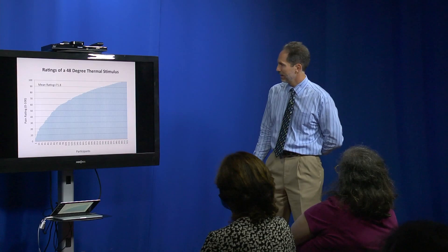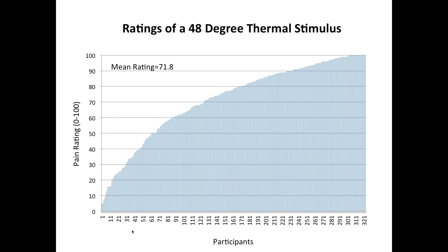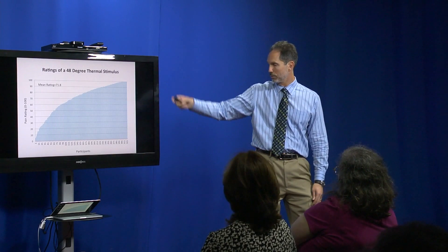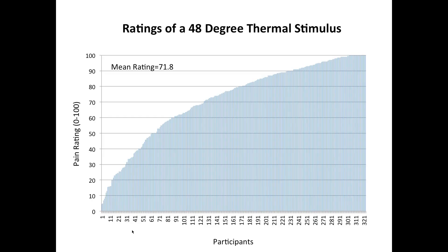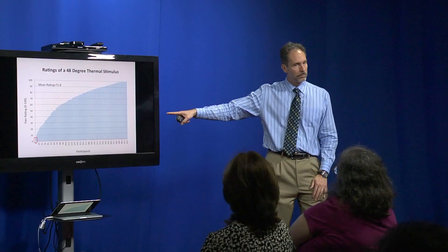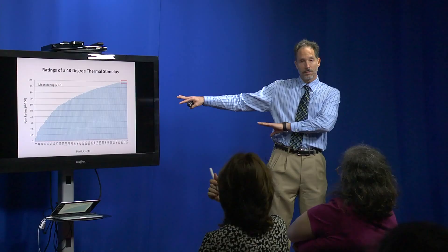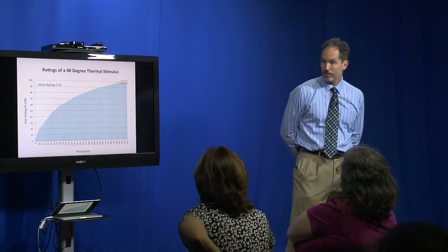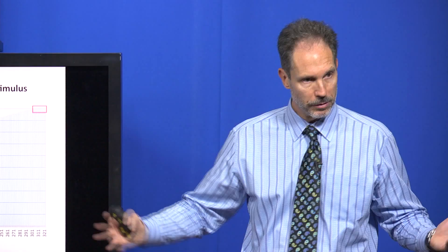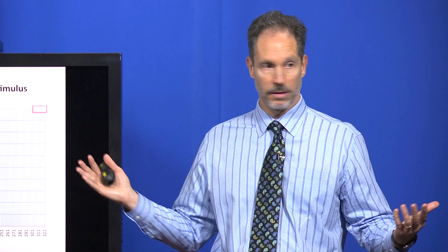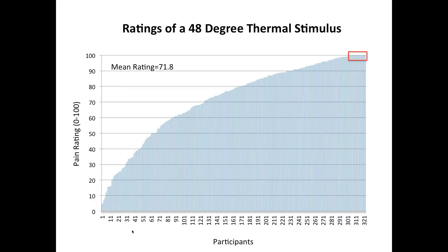For example, we applied a 48-degree Celsius heat stimulus to the arm—about 118 degrees Fahrenheit—and asked people to rate how painful it was on a scale from 0 to 100. On average, participants rated it almost a 72, so it's really fairly painful. But some people barely found it painful at all, rating it 5 out of 100, while others found it exquisitely painful. We see the same wild disparity in pain experiences as after surgery, and this has nothing to do with medications or health problems—the stimulus was identical for everybody.